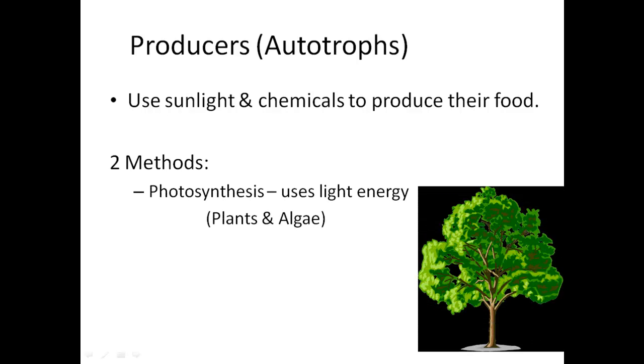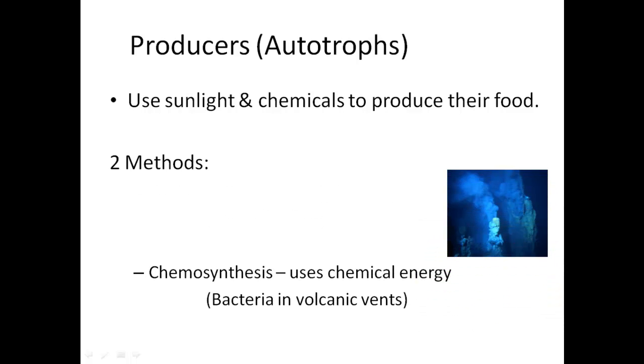First, we have our producers, or autotrophs. They use sunlight and chemicals to produce their own food. We have two methods. We can use photosynthesis, which uses light energy. Plants and algae do photosynthesis. We also have chemosynthesis, which uses chemical energy. Bacteria in volcano vents do this method.